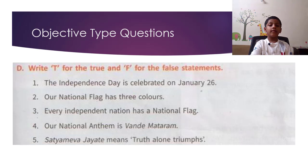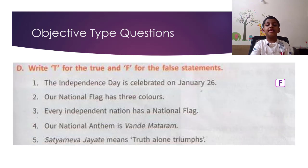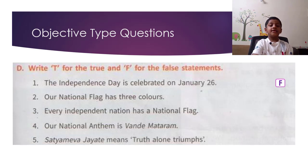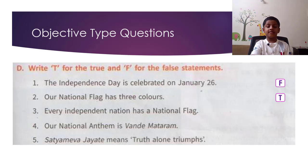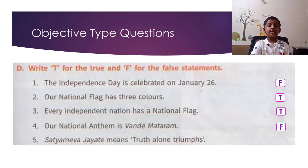Write T for true and F for false statements. The Independence Day is celebrated on January 26th — False. Independence Day is celebrated on 15th August — True. Our national flag has three colours — True. Every independent nation has a national flag — True. Our national anthem is Vande Mataram — False. Our national anthem is Jana Gana Mana. Satyameva Jayate means truth alone triumphs — True.